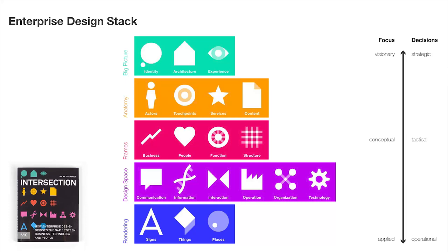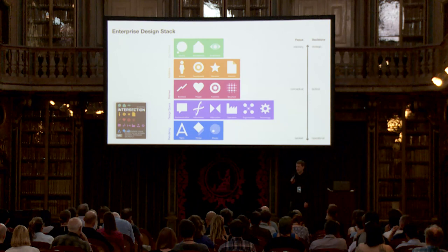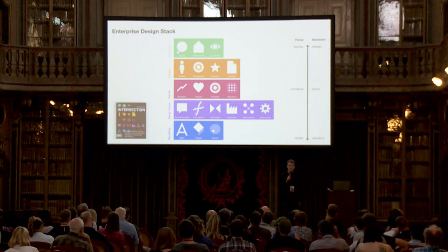Some time ago we created a framework — now called the Enterprise Design Stack — which was part of the book Intersection that we published in 2012. It introduces 20 aspects on five layers, covering kind of everything you might want to look at when you have an enterprise design challenge. It's 20 aspects, not three. It's five layers, not three. It goes from the architecture to the brand identity and culture and the experience of people, all the way down to what we call the rendering — the tangible result of the enterprise activity — and everything conceptual in between.